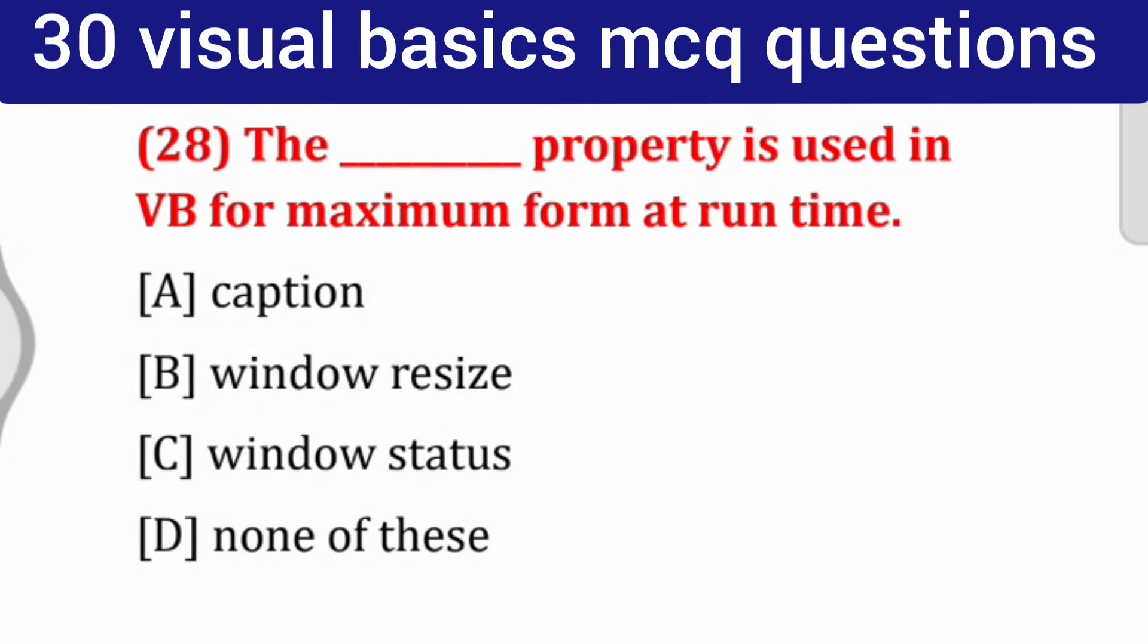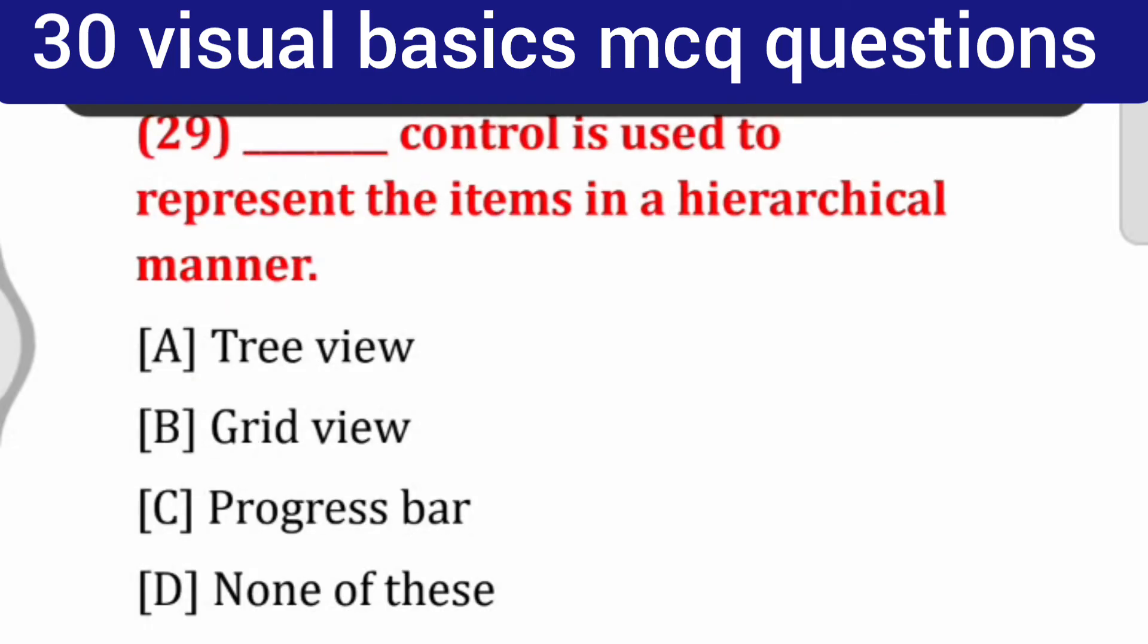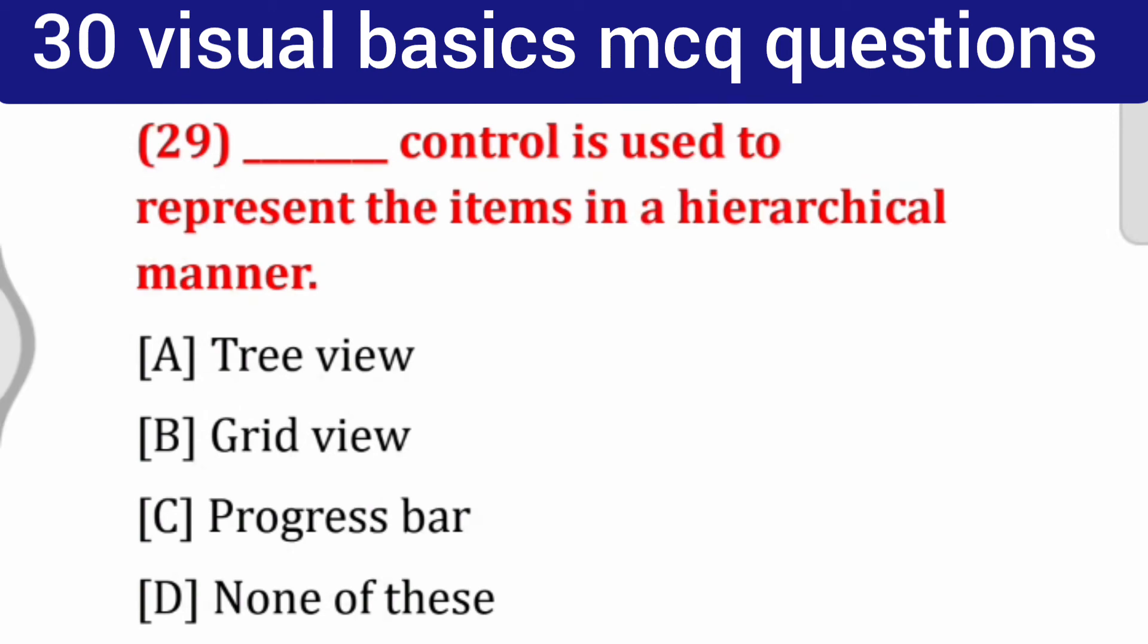Question number 28: The ___ property is used in VB for maximum form at run time. Correct answer is window status.